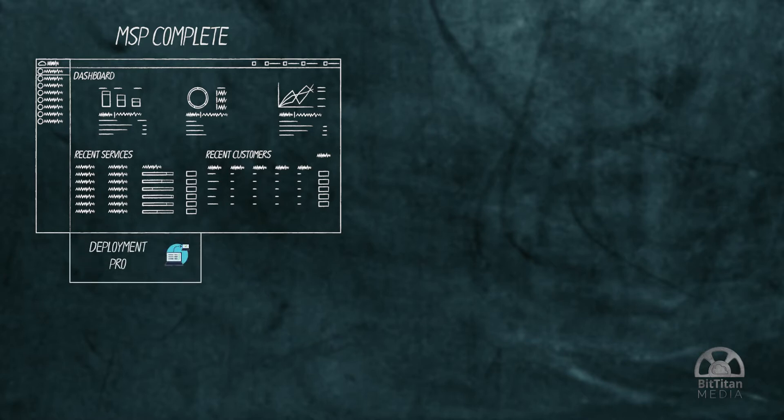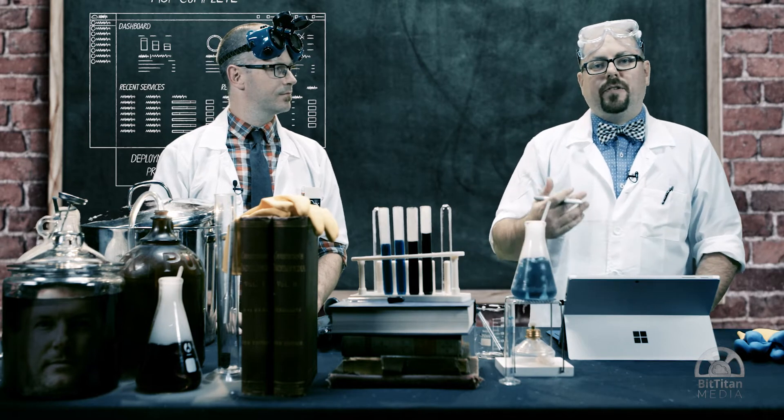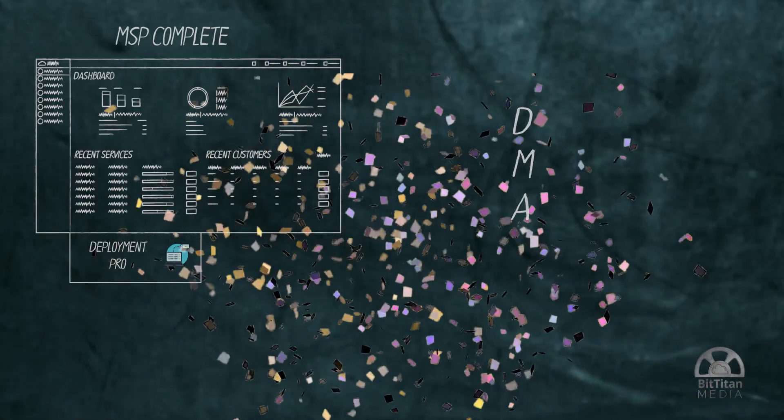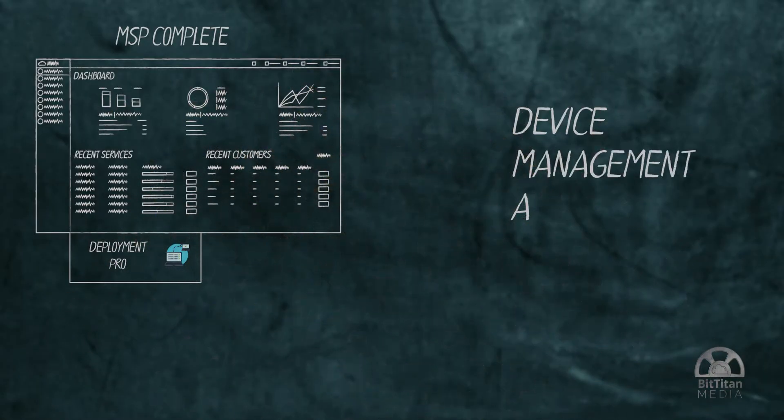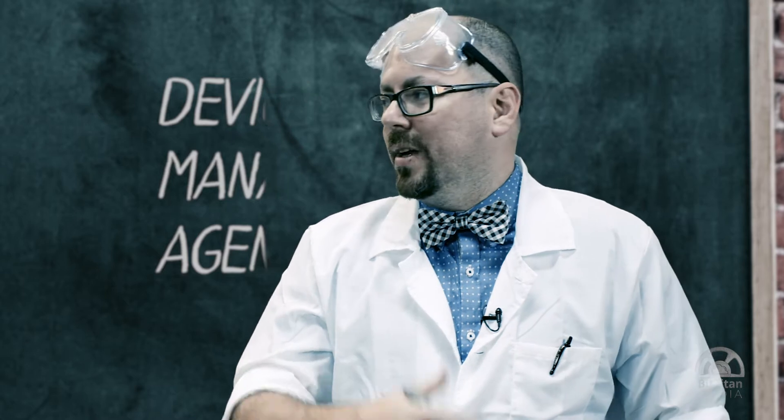Now, Deployment Pro works on a basis of the DMA agent. And Daryl, what did DMA stand for? Device Management Agent. Absolutely. So, Device Management Agent. And that Device Management Agent is going to look at the original Outlook profile and do the reconfiguration into a new Outlook profile while keeping the same settings.